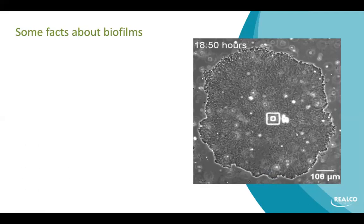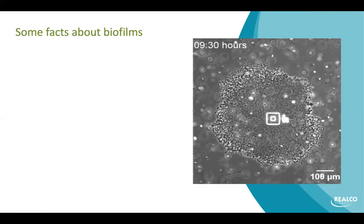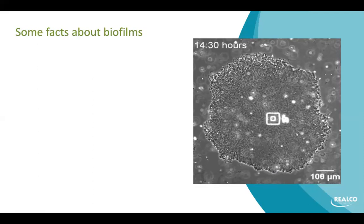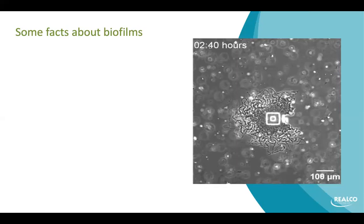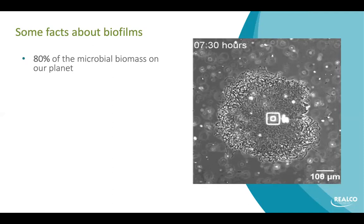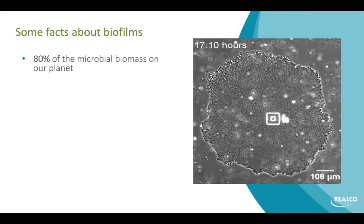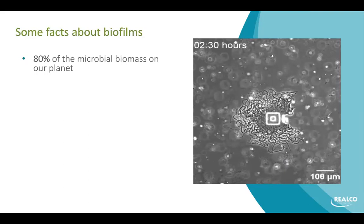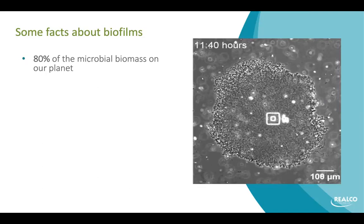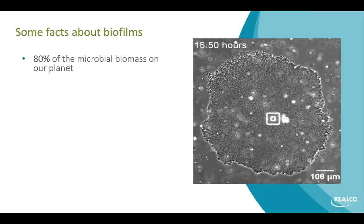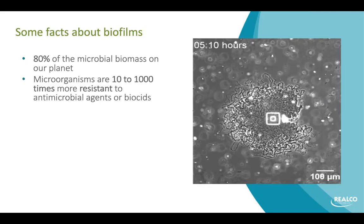It doesn't take one week or one month for a biofilm to develop in a facility — it takes a few hours. After a few hours you have those germs that are under the protective layer. It is estimated that 80 percent of the microbial biomass on our planet is organized into a biofilm, because those germs want to protect themselves against mechanical or chemical aggression. It's very widespread in the microbial biomass.